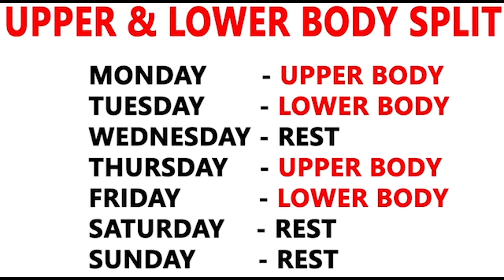Next is the upper/lower split. Upper body muscles — chest, shoulders, back, and arms — are trained in one day. Lower body muscles — quads, hamstrings, and calves — are trained another day. The schedule is: Monday upper body, Tuesday lower body, Wednesday rest, Thursday upper body, Friday lower body, Saturday and Sunday rest. Each muscle gets at least 2 exercises, 2 to 3 sets.